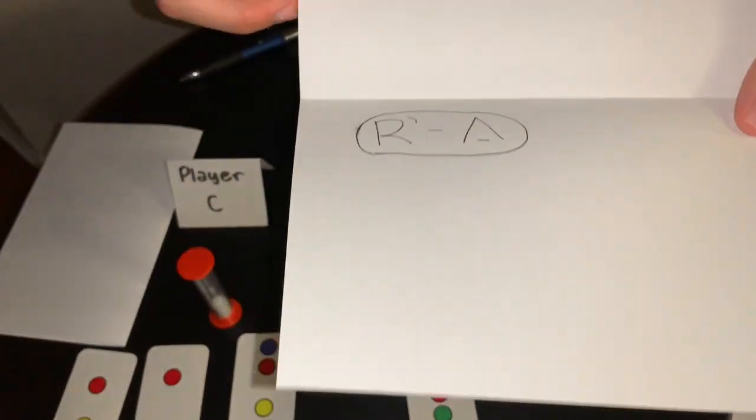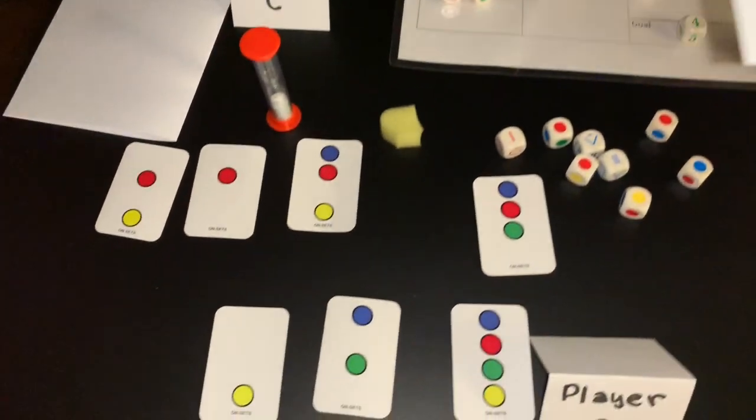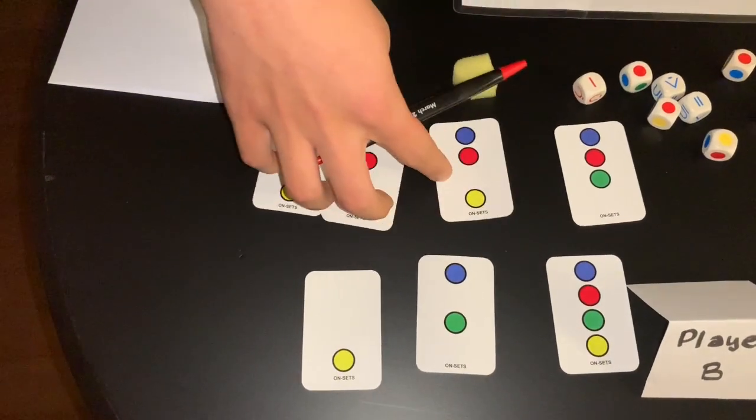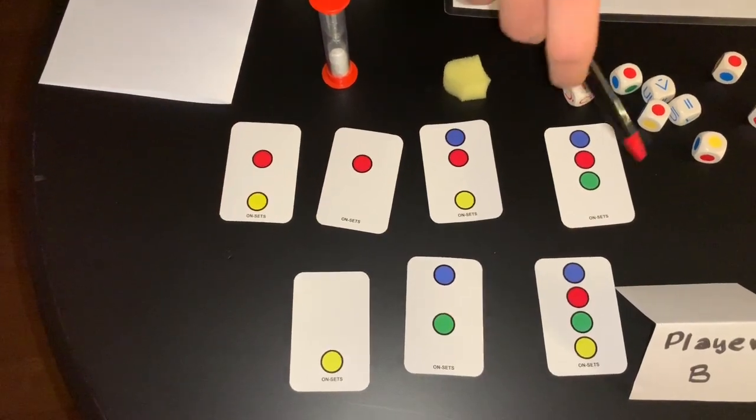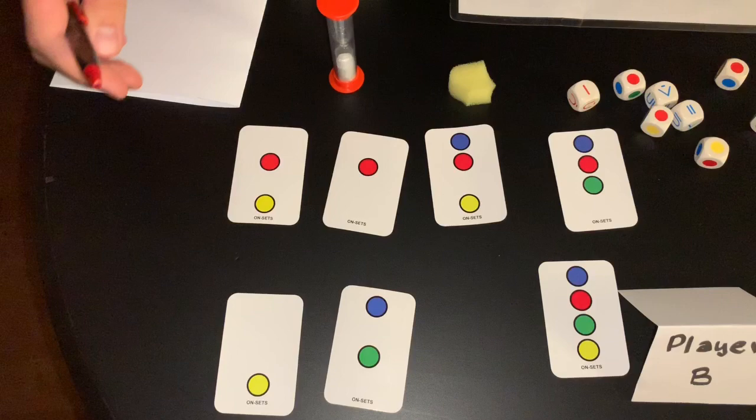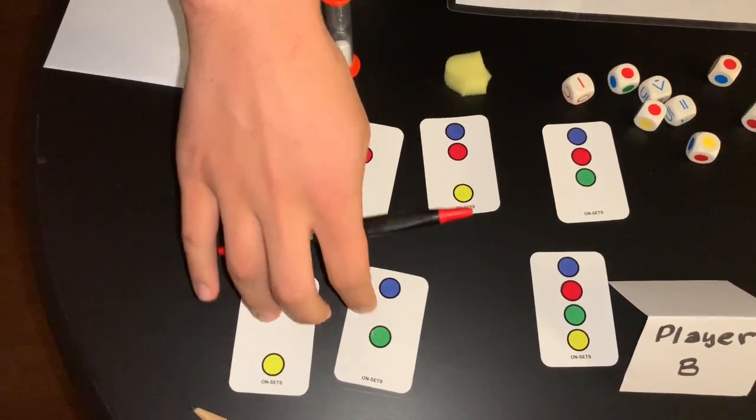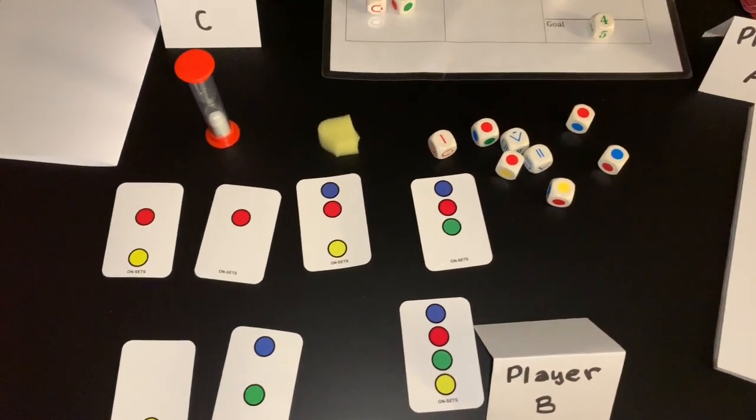Now, player B is sided with player A. Player B also wrote a solution of red prime minus empty set. So if we look at player B's solution, red prime means all the cards that are not red. So that leaves us with these two here. If you subtract empty set from that, you subtract nothing from two, you're left with two. So this solution is incorrect because the goal is four.